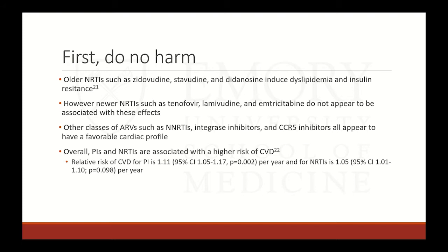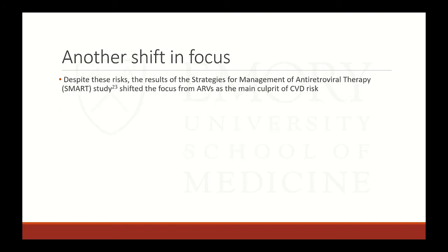Other classes of antiretrovirals — NNRTIs, integrase inhibitors, and CCR5 inhibitors — all appear to have a pretty favorable cardiac profile. Overall, protease inhibitors and NRTIs are associated with higher cardiovascular disease risk. The relative risk for cardiovascular disease with a protease inhibitor is about 1.1 per year on therapy, and with an NNRTI, 1.05 per year. These are low numbers, but remember these are drugs patients will be on for 10, 20, 30, 40, even 50 years — making the cumulative lifetime risk significant.